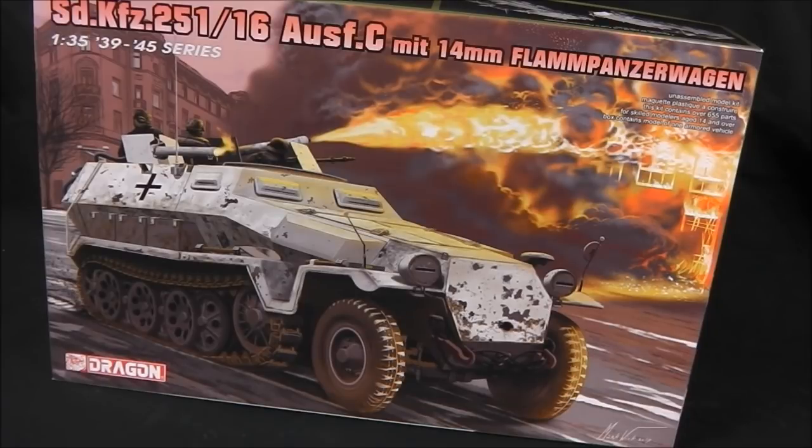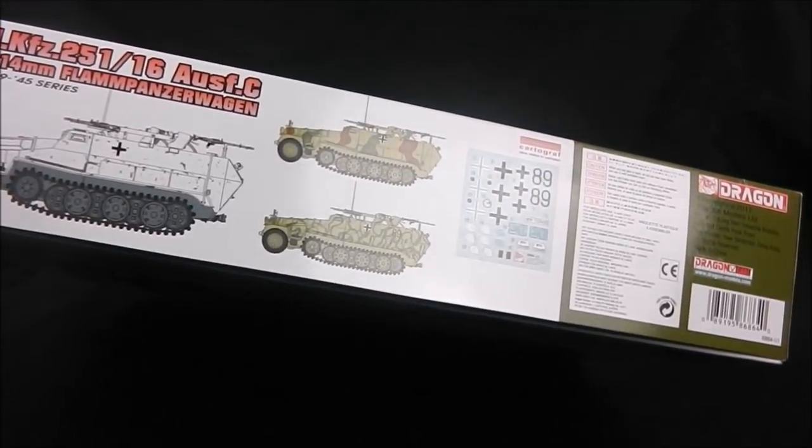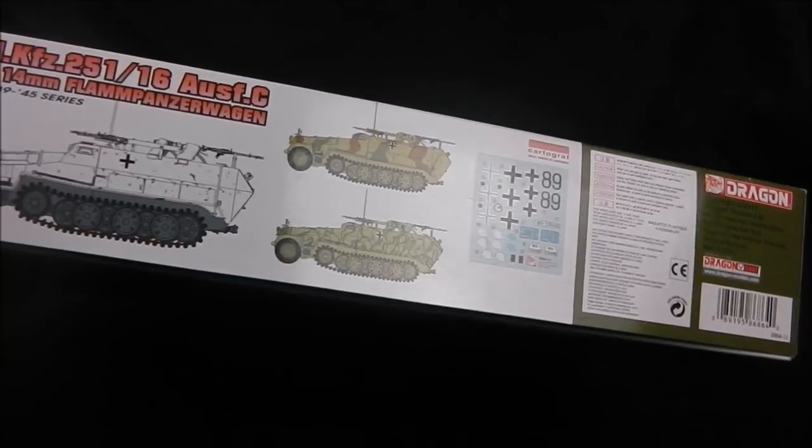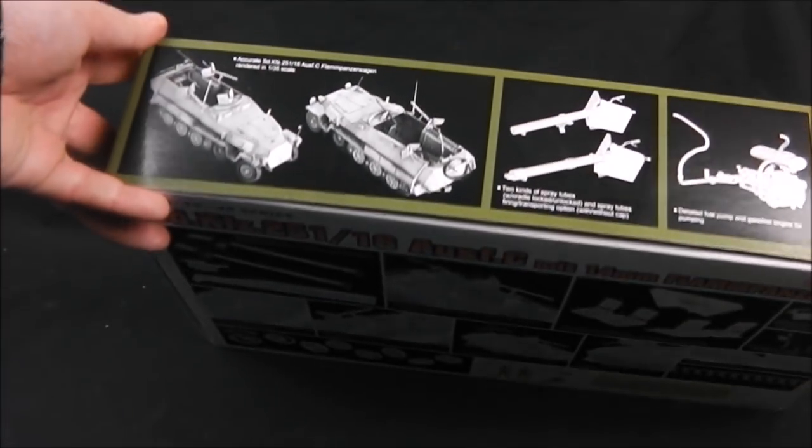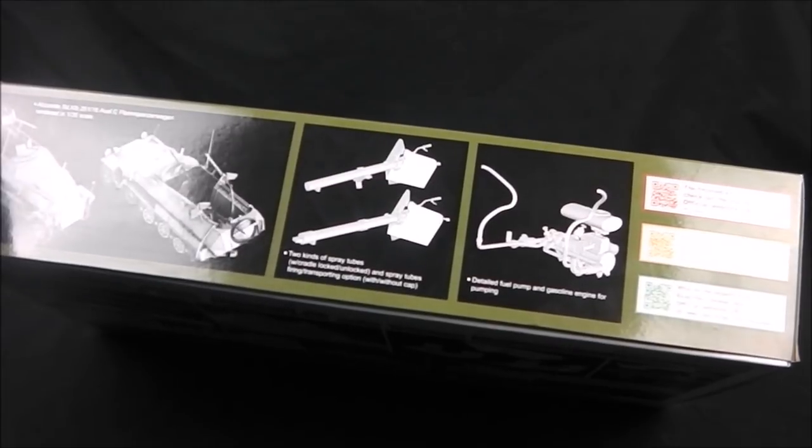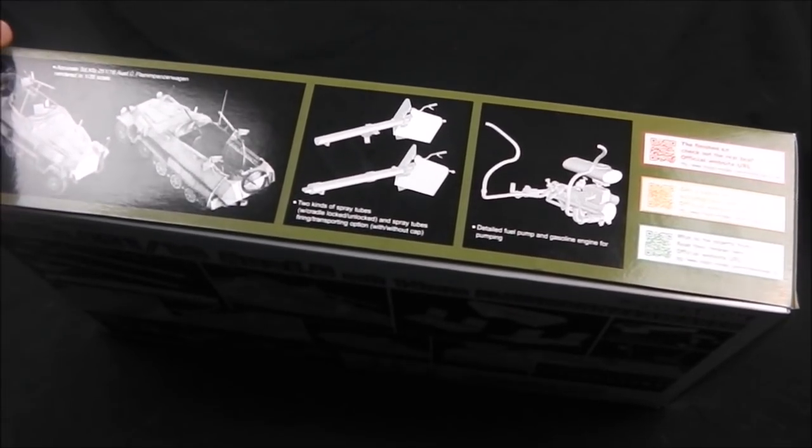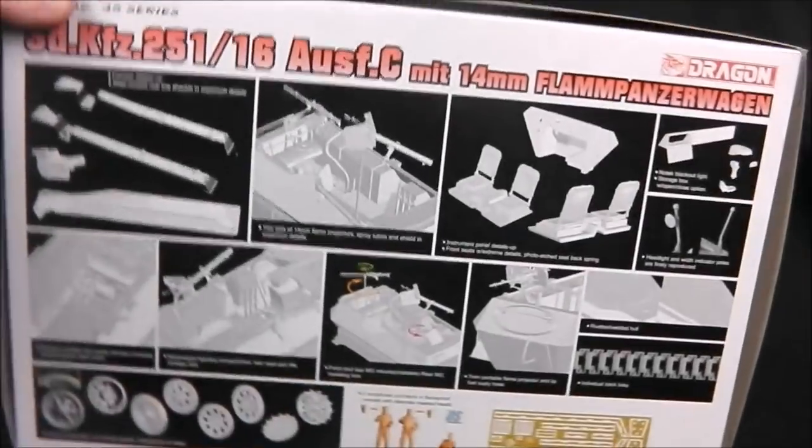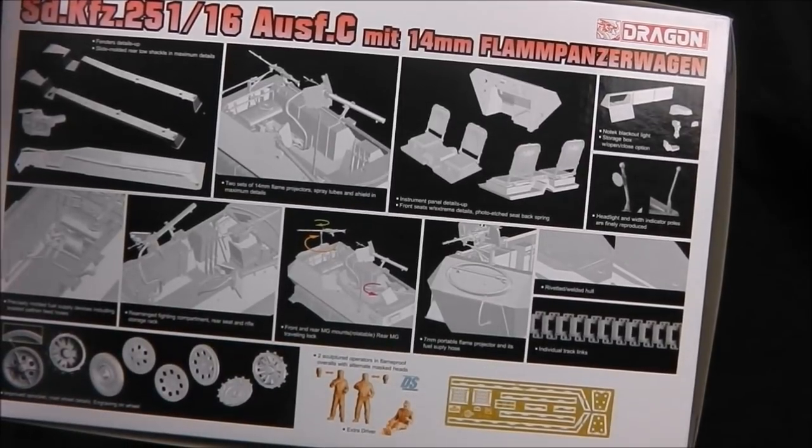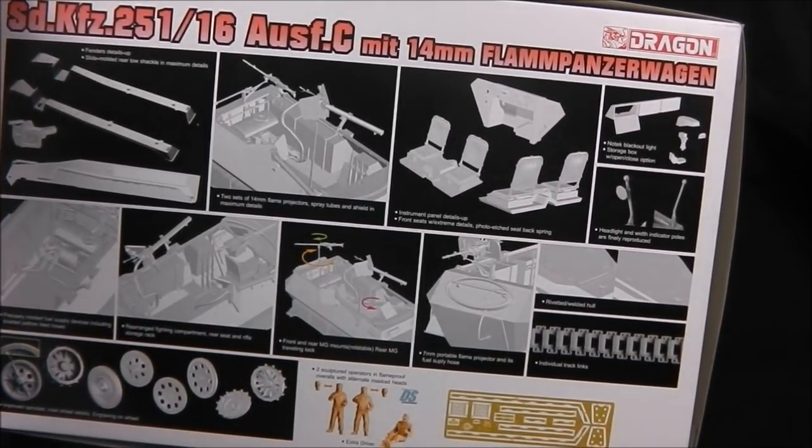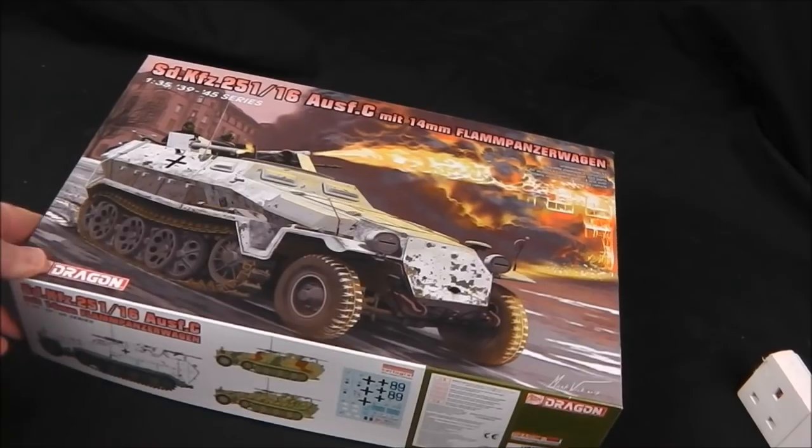First we're greeted with a really nice and eye-catching box art of this machine being used in urban warfare. We get our standard Dragon color marking guides on the side of the box as well as Cartograf decals. Some CAD drawings on the side of the built-up vehicle, CAD drawings of the flame projectors themselves and the pump system. On the back, more CAD drawings of various details. We do get some DS crew members, which can be a good or bad thing depending on how you view DS.